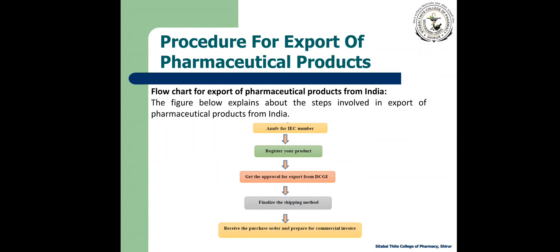The next topic is the flowchart for export of pharmaceutical products. This figure explains in a simple way how the export of pharmaceutical products takes place. First, apply for the IEC number — IEC stands for Import Export Code number, which is given by DGFT, the Directorate General of Foreign Trade. Then register your product, get the approval for export from DCGI, finalize the shipping method, receive the purchase order, and prepare the commercial invoice.